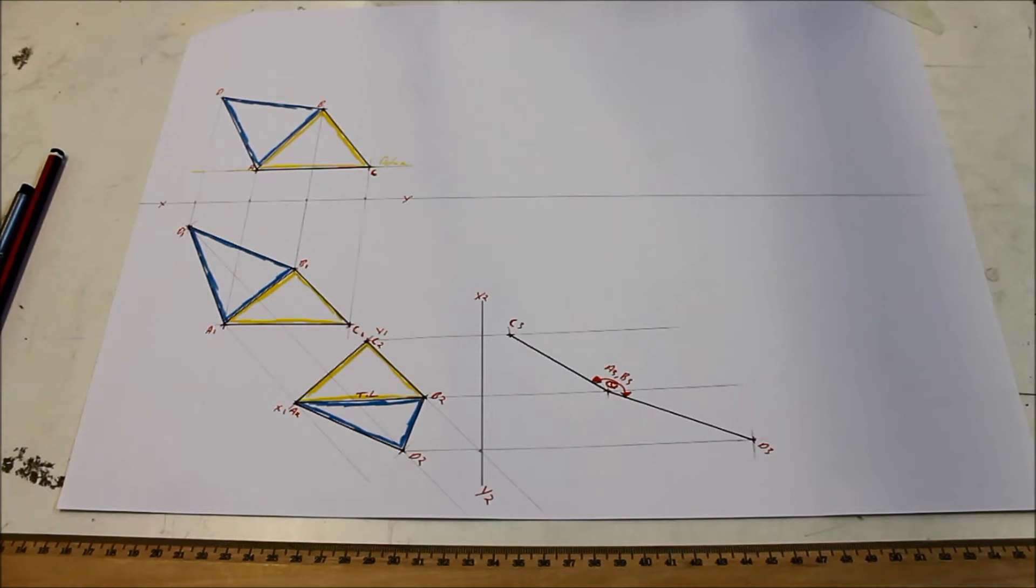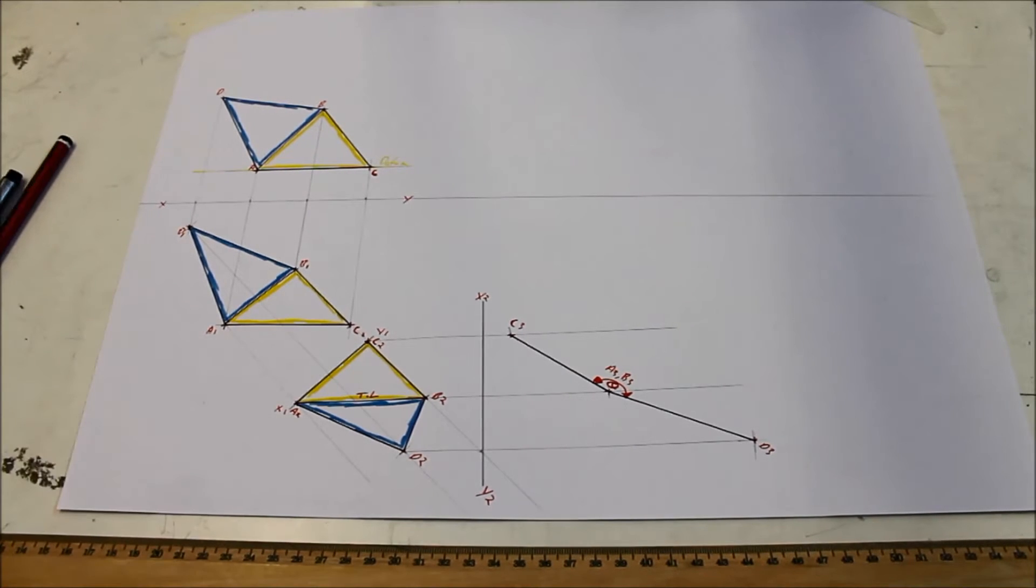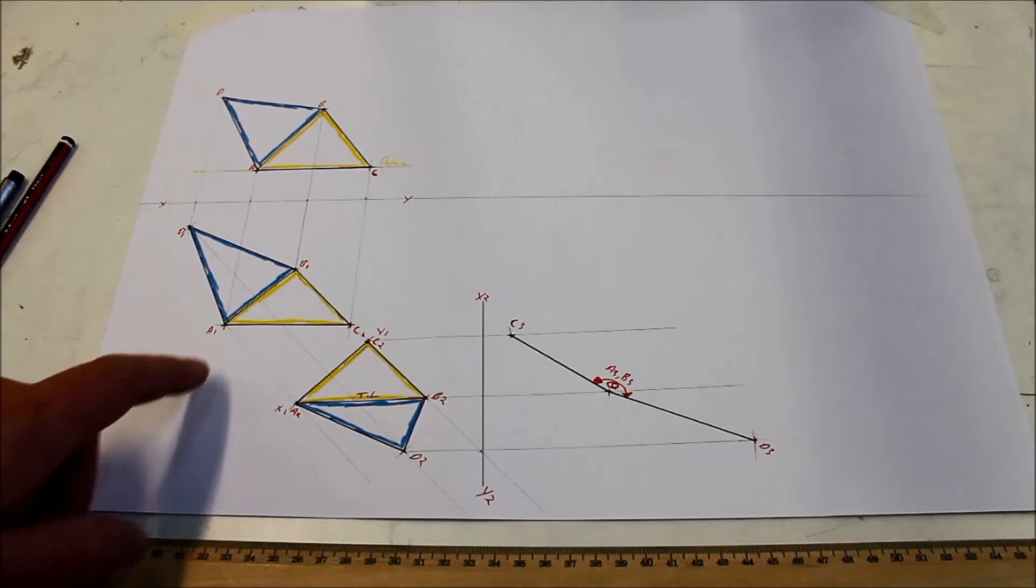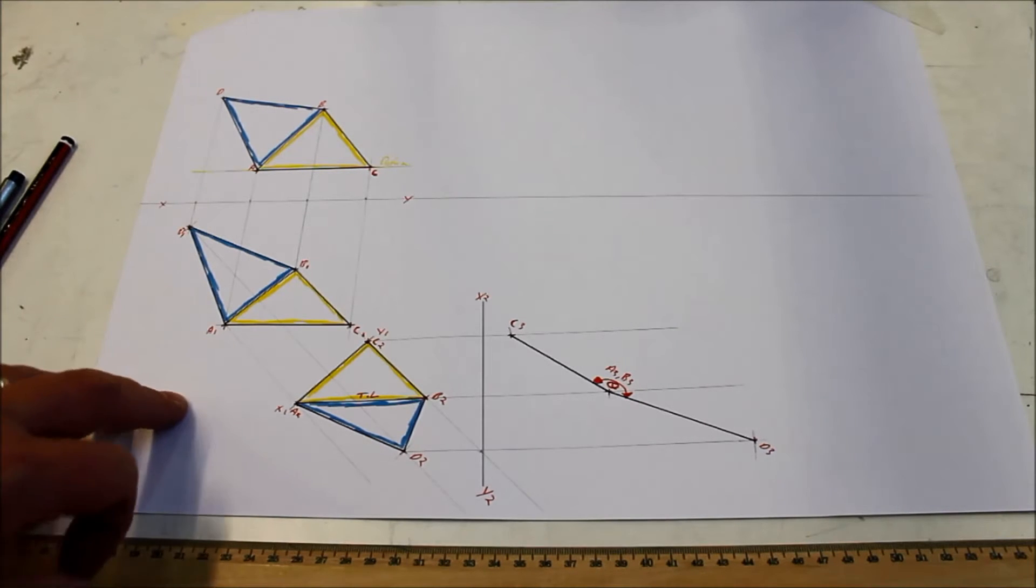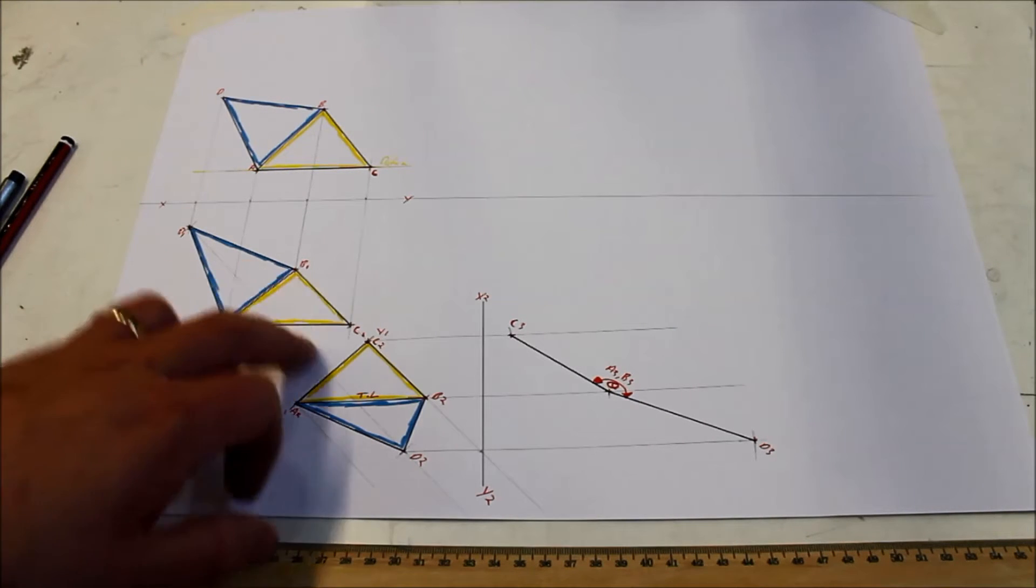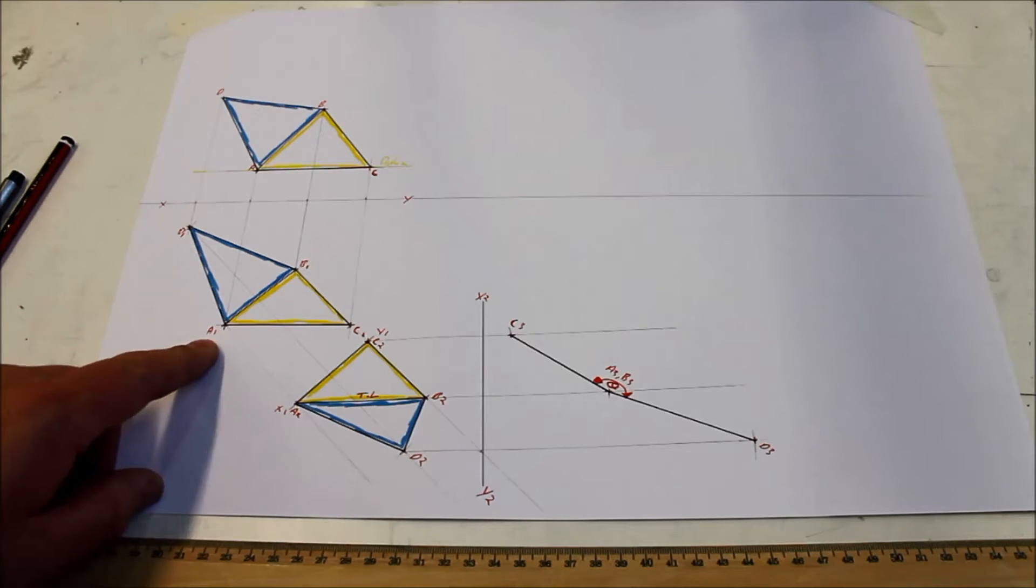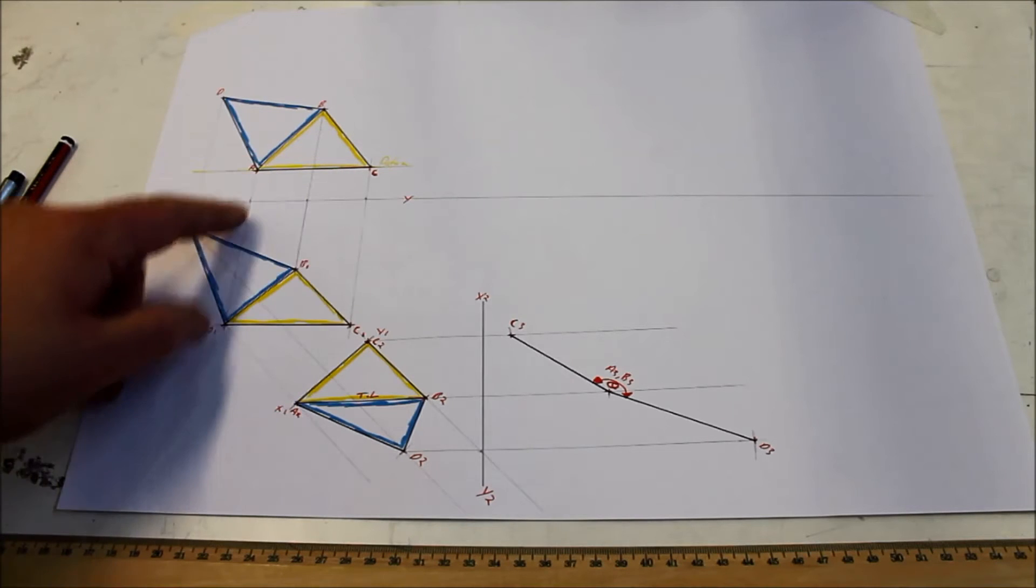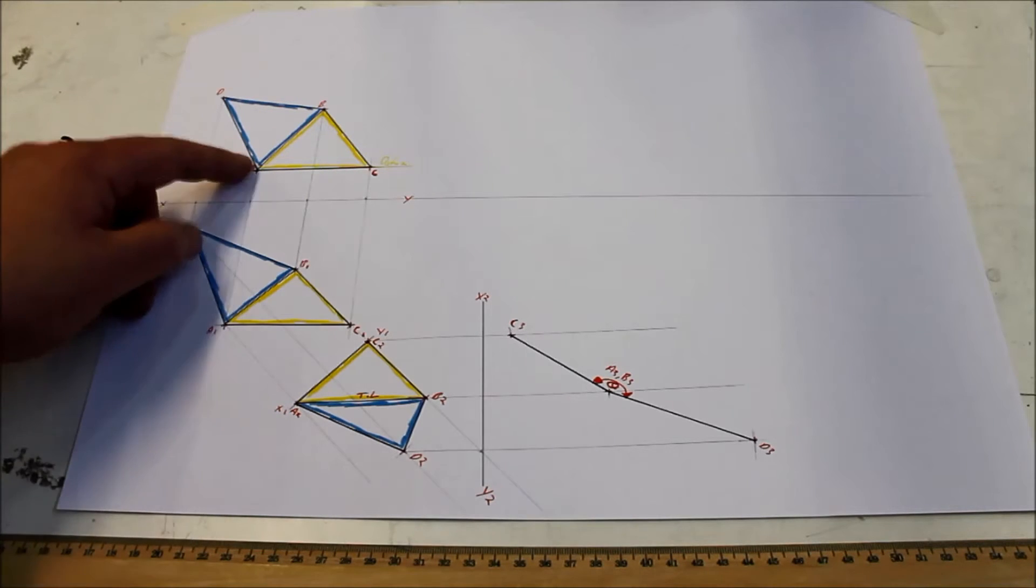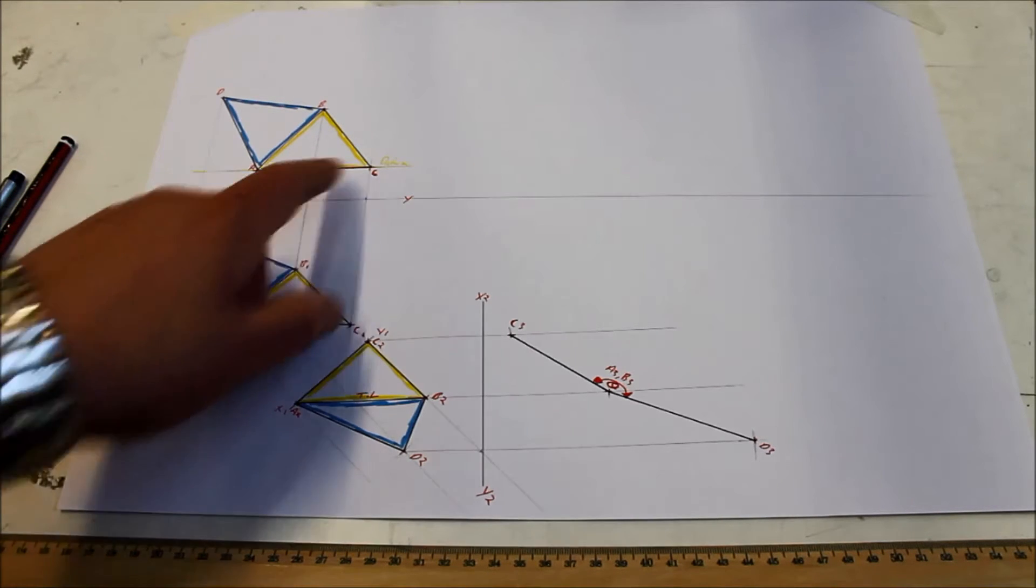Next we have: determine the true shape of triangle ABC. Okay, so determine the true shape of triangle ABC. Let's look at all the edges first. We have AB and BC, and then AC here. As you see, A1 C1 is parallel to XY line, and AC is also parallel to X1.